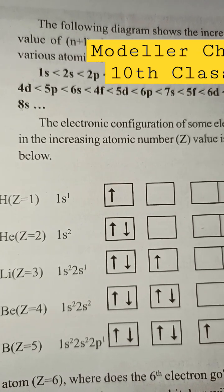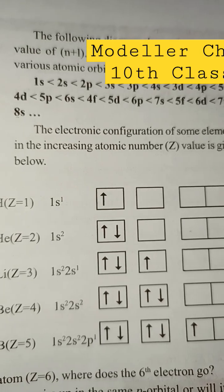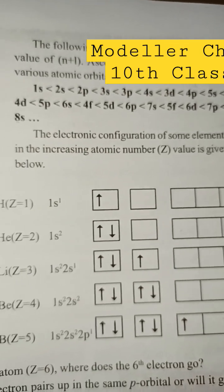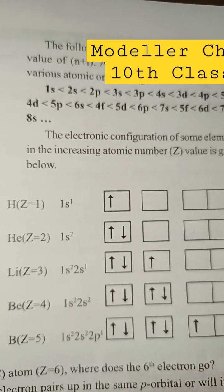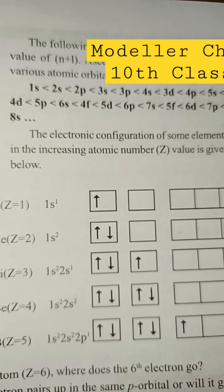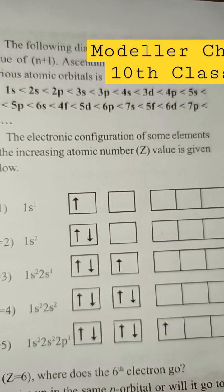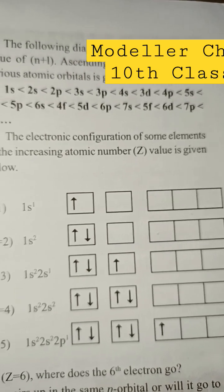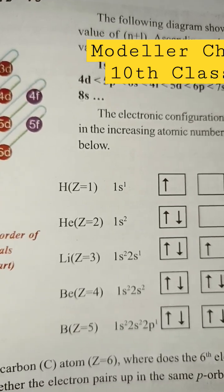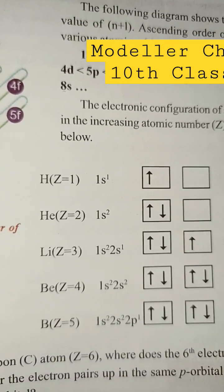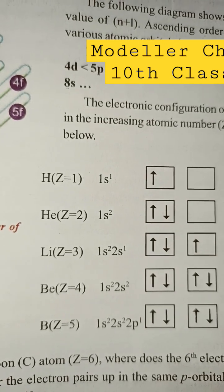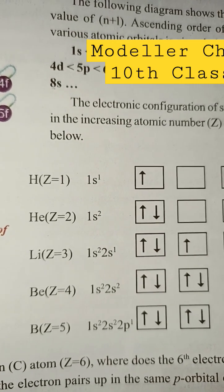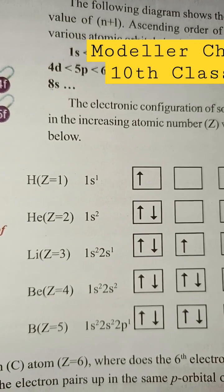The electronic configuration of some elements in the increasing atomic number Z value is given below. Hydrogen, H, Z equal to 1, has the electronic configuration 1s¹.